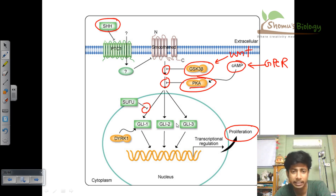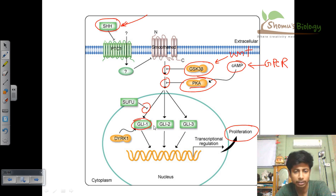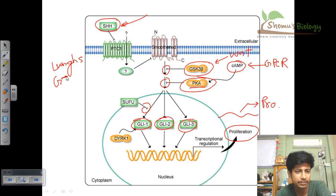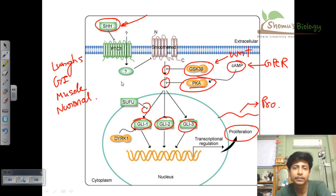The only way to activate the pathway is for SHH — sonic hedgehog — to bind and start the whole signaling cascade, finally turning on GLI 1, 2, and 3 depending on which kind of hedgehog signaling molecule is binding. This activates gene transcription, produces mRNA and proteins, and all the necessary processes start to operate for the development and differentiation of specific cell types like lung cells, GI tract cells, muscle cells, and neuronal cells.